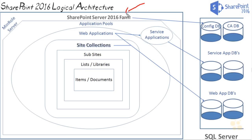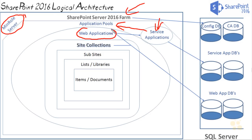We have our SharePoint 2016 farm, and during the install we identify our MinRole server. Based on that MinRole, service applications are created with application pools assigned to them. We can add additional service apps, which will consume an additional application pool, or we could use a generic application pool. We create web applications that host our content, and service applications are tied to the web applications. After creating the web app, I create my root site collection, then I can create other site collections using managed paths. Within site collections we have sub-sites, lists and libraries, items, and documents.